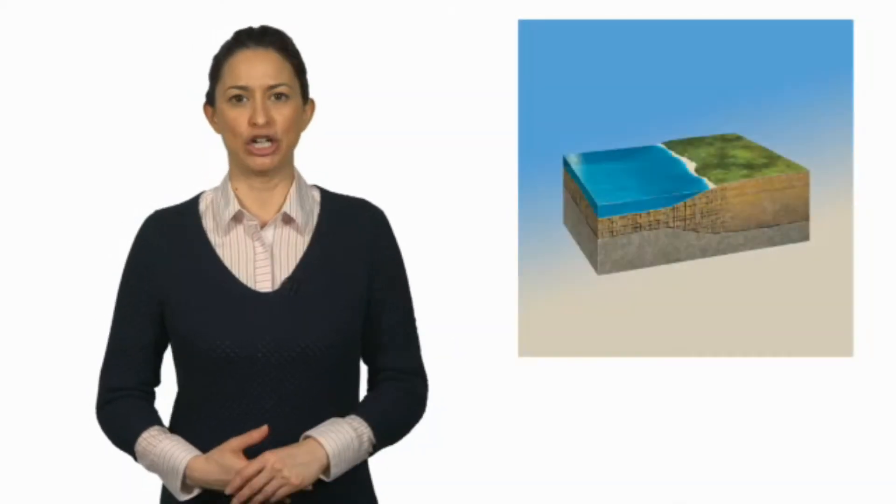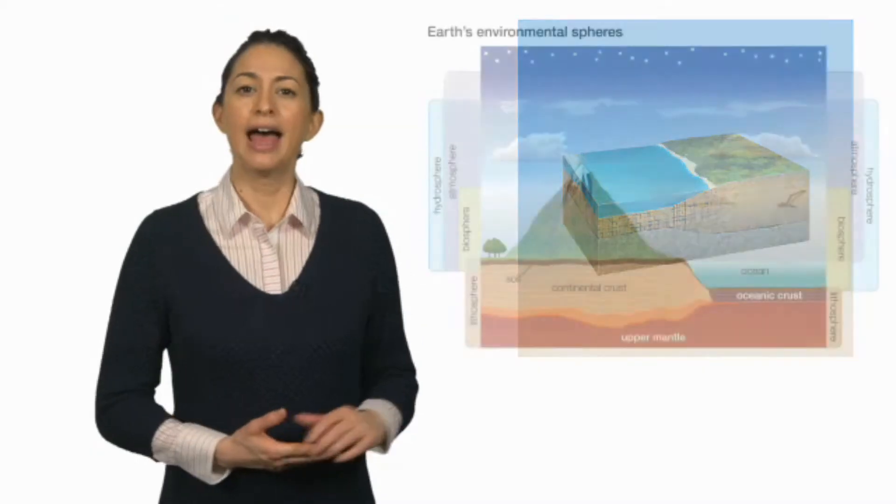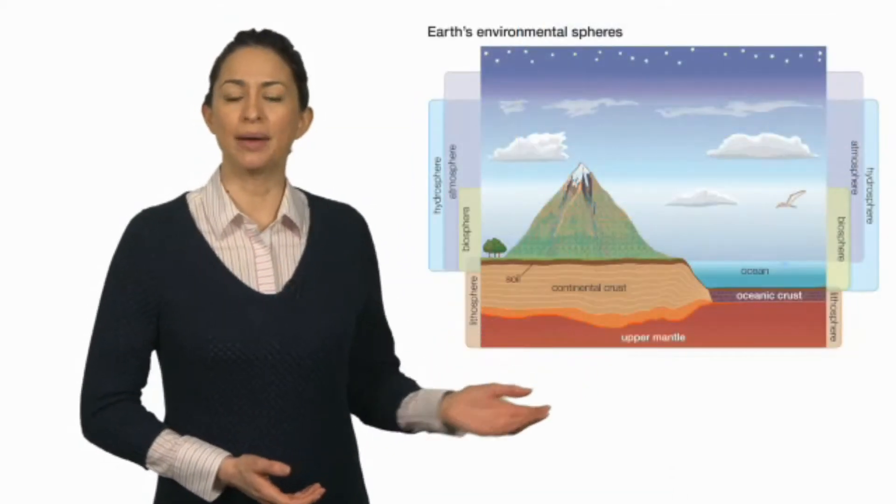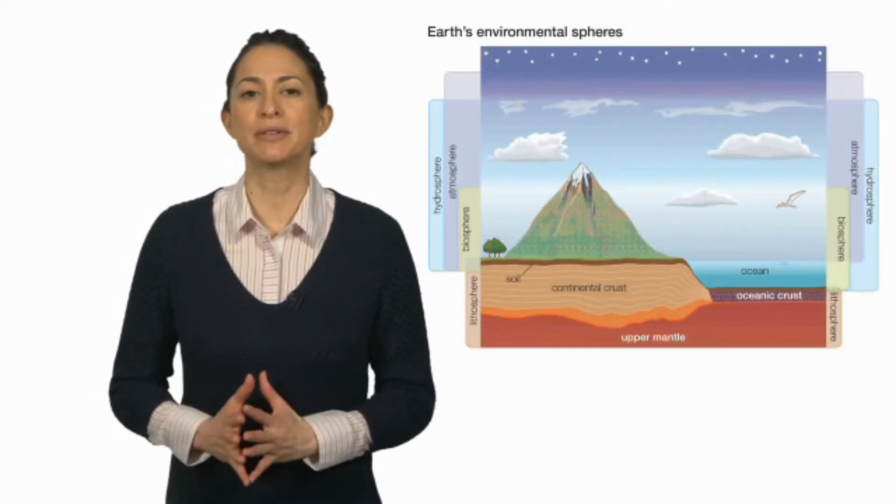Look at this picture. We all live here on the outside of the Earth. This is called the Earth's crust. As you can see from this diagram, there are two types of crust.